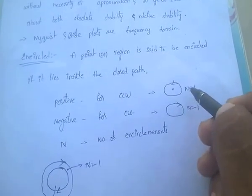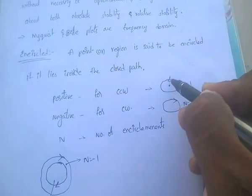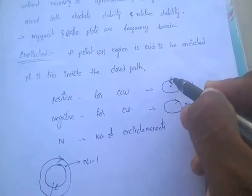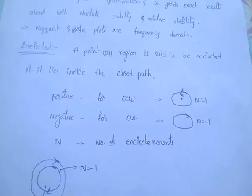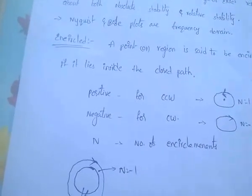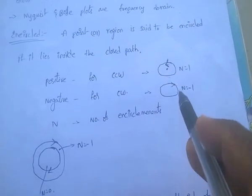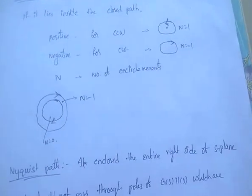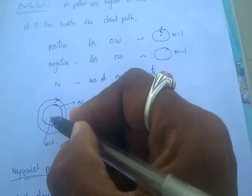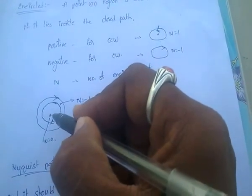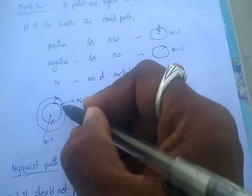N is the number of encirclements. If the direction is counterclockwise, N equals plus 1. If the direction is clockwise, N equals minus 1. If the point is outside the path, there is no encirclement, meaning N equals 0.